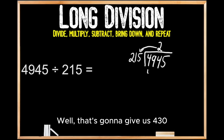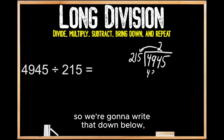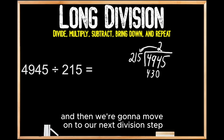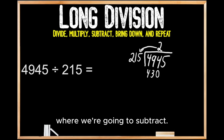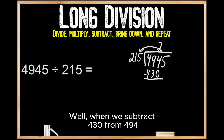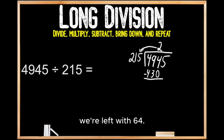Then we move on to the next division step where we multiply 2 times 215. That gives us 430, so we write that down below. Then we move on to our next division step where we subtract. When we subtract 430 from 494, we're left with 64.